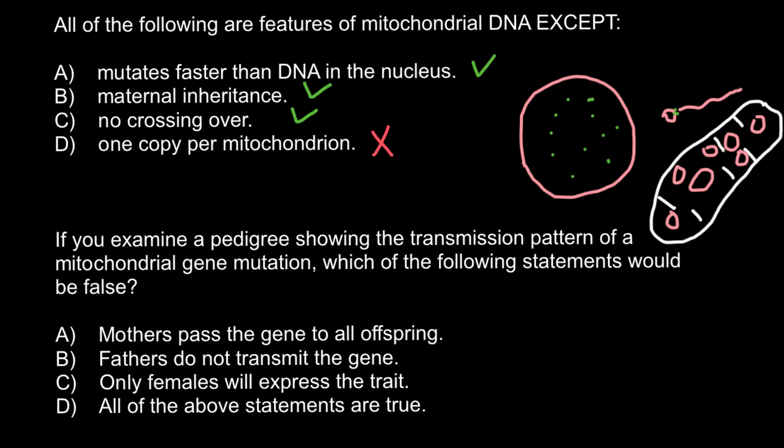Answer D: one copy per mitochondrion — this is not true, because as you can see in this picture there are many circular mitochondrial DNA molecules per one mitochondrion. So the correct answer — the only incorrect statement — is answer D. We were asked which answer is incorrect, and that is answer D.